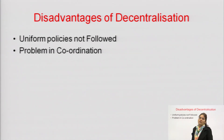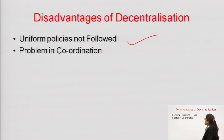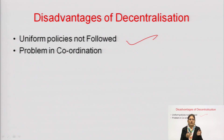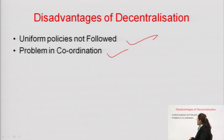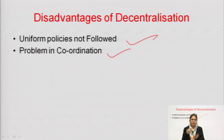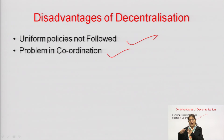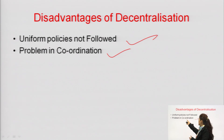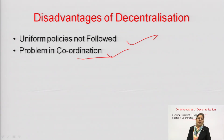Disadvantages of decentralization: Number one is that a uniform policy is not followed. As work is divided into departments, different departments may have their own policies, so uniformity may be compromised. Next is a problem in coordination — as every department will have their own specific rules, coordination problems can arise in decentralization. Every department will have their own priority, so at certain points they may not agree with each other's decisions, leading to coordination problems.